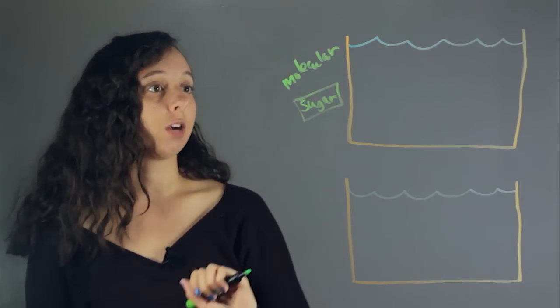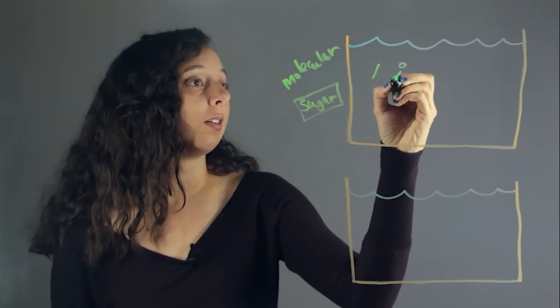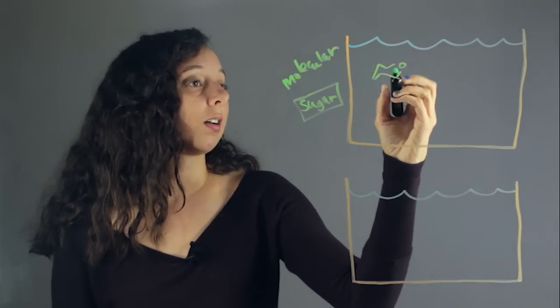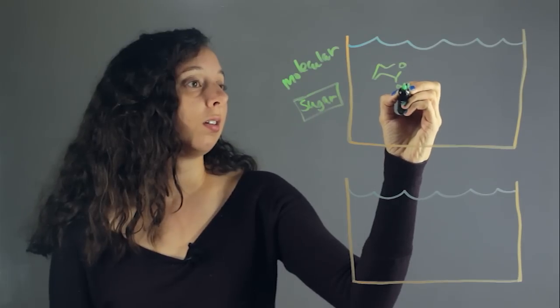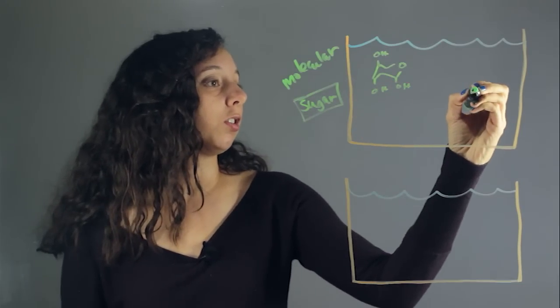So if we have our sugar molecules, and we have a couple here. So sugar is usually a bunch of carbons and a bunch of OH groups.